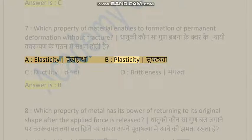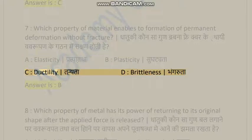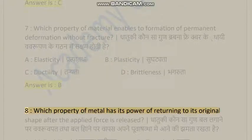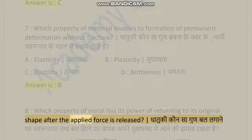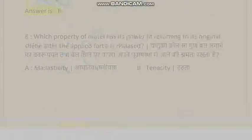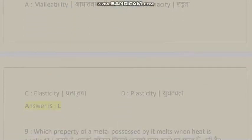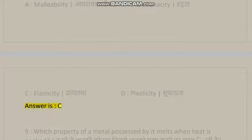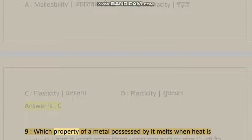Question 7: Which property of material enables the formation of permanent deformation without fracture? A) Elasticity, B) Plasticity, C) Ductility, D) Brittleness. Answer is B. Question 8: Which property of metal enables the filament of an electric lamp to remain suitable after the applied force? A) Malleability, B) Tenacity, C) Electricity, D) Plasticity. Answer is C.